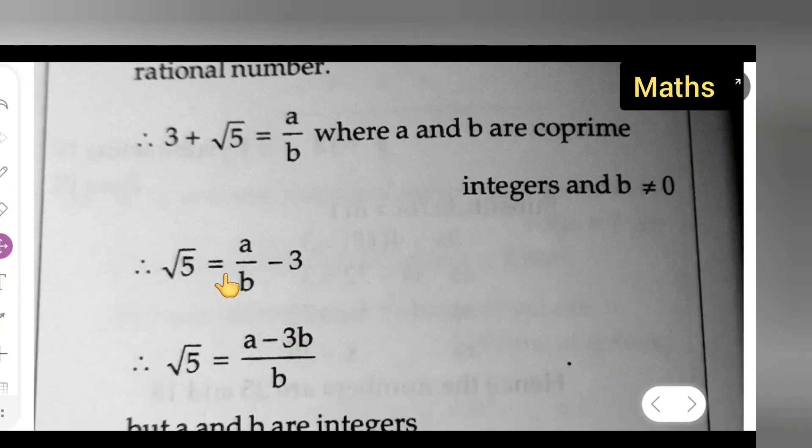Now root 5 equals, multiply this with this, you're going to cross multiply this. So a minus 3b upon b.